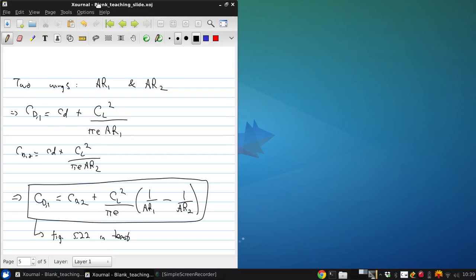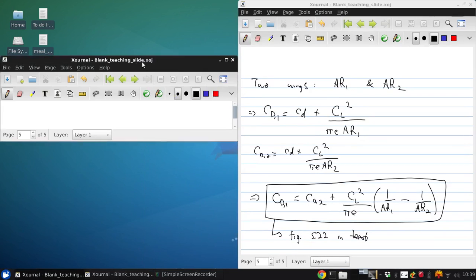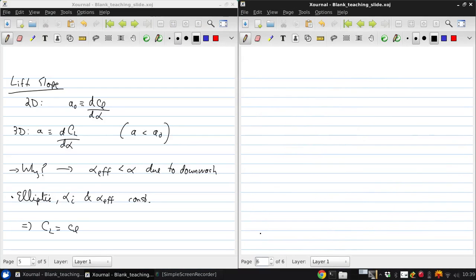So let's look at what's happening to the slope. Okay, dCl over the effective angle of attack, well that's going to be A0. But we see the geometric angle of attack alpha, not alpha effective.